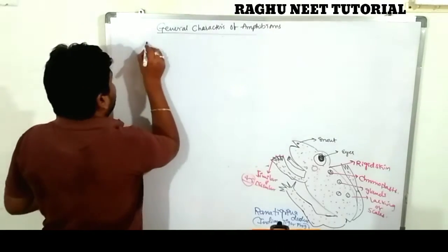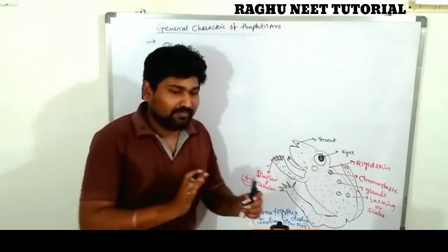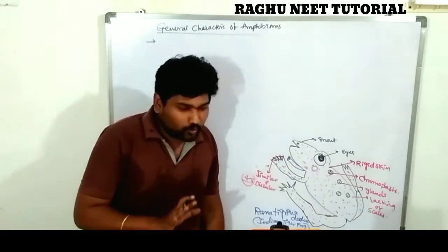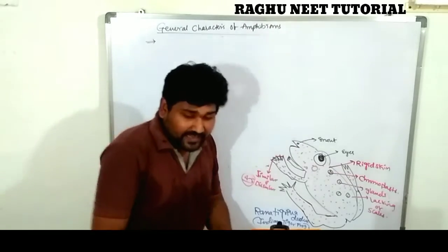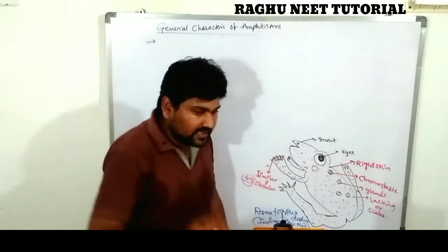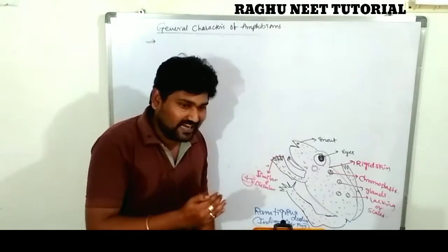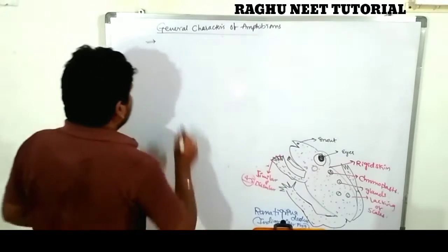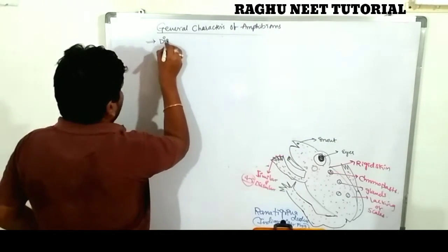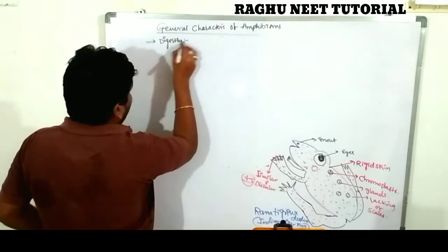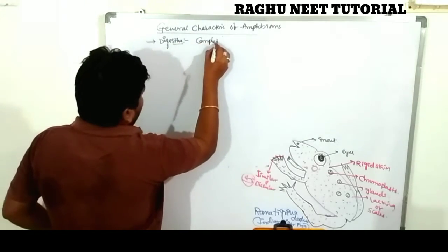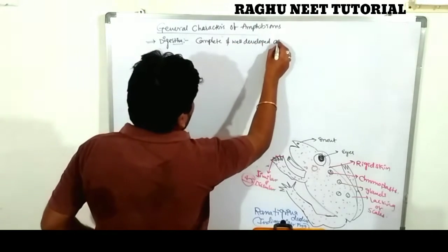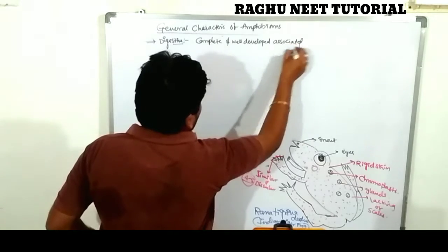The first internal characteristic of Amphibia is the complete digestive system. Most organisms have a digestive system, but lack associated glands. In this class, Amphibia begins to associate with glands, so it is called a complete digestive system — complete and well-developed, with associated glands.